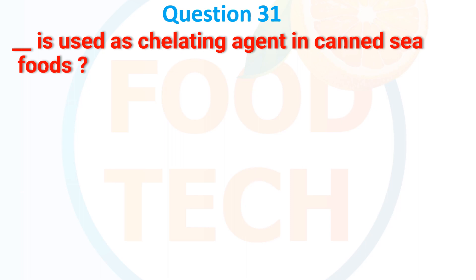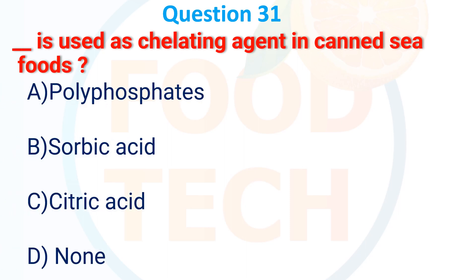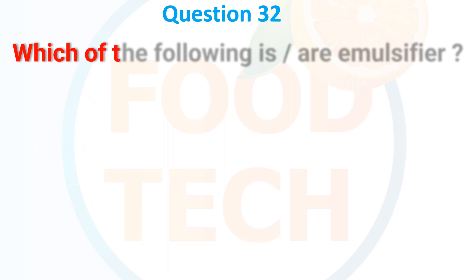What is used as a chelating agent in canned food? A. Polyphosphate, B. Sorbic acid, C. Citric acid, D. None. The answer is A. Polyphosphate.